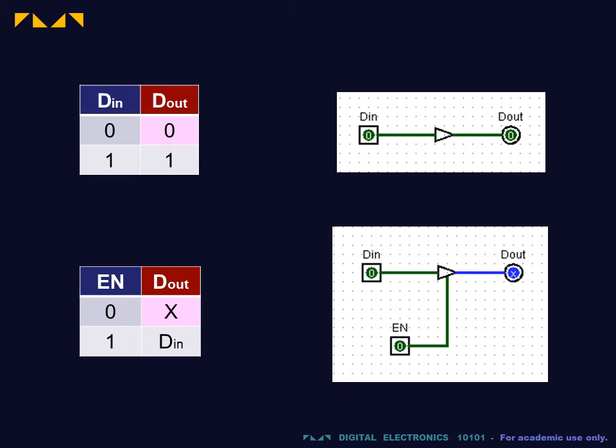Finally, since the value of Din is undefined in both cases, we can remove that column altogether. In this concise form, the truth table very succinctly highlights the function of the control input EN.